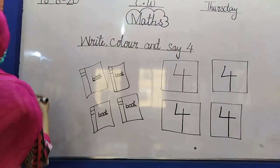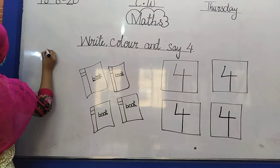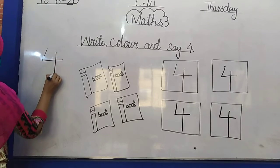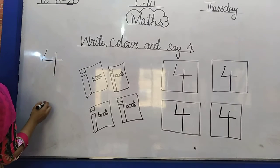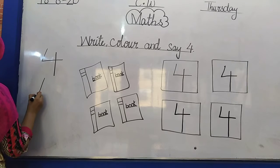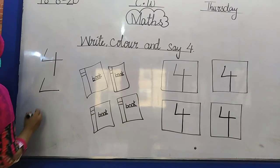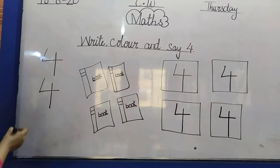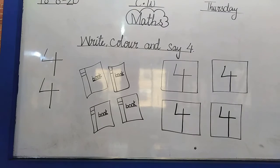Again look at the board. Make a standing line. Then make a sleeping line. Then make a standing line. Then again make a standing line. 4.